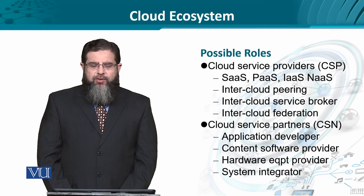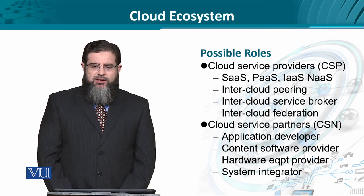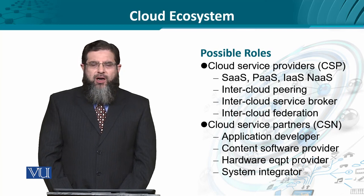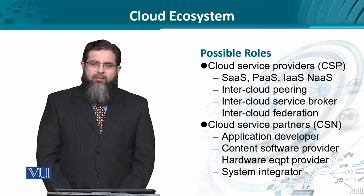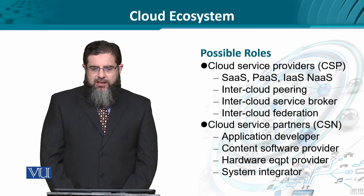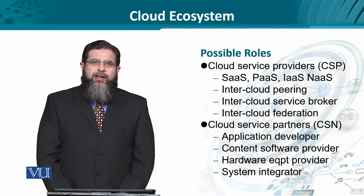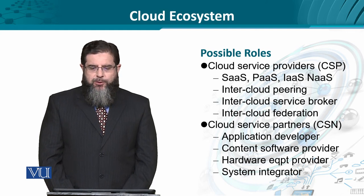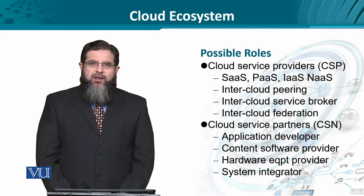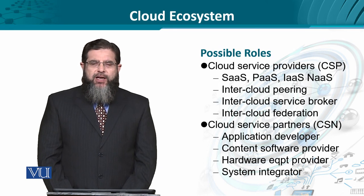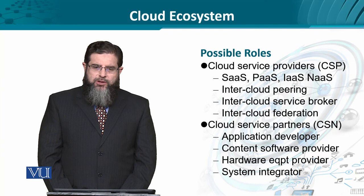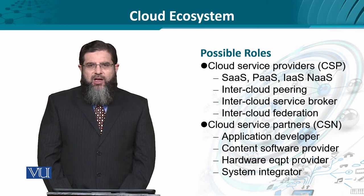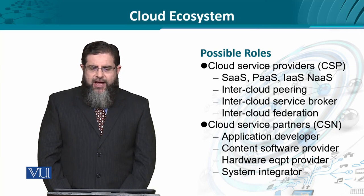Now let's look at the possible roles for the service users, providers, and partners. The cloud service users could be individuals, the government itself, or enterprises. The cloud service providers could provide the very basic classical forms of cloud services like infrastructure, software, platform, network, etc. In addition, service providers could get together in various relationships known as interworking or internetworking of cloud service providers for peering, service brokerage, and federation.